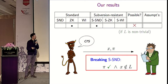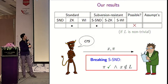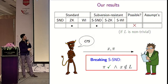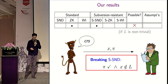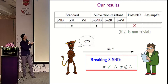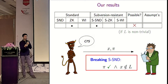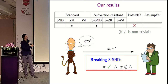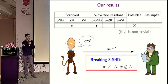Now the bad news: if we want zero knowledge, we cannot have subversion soundness. The reason is that zero knowledge guarantees there is a simulator that can simulate proofs, and unless the language is trivial, we can use the simulator to simulate a proof for a wrong statement, thereby breaking soundness. So these two goals are incompatible.